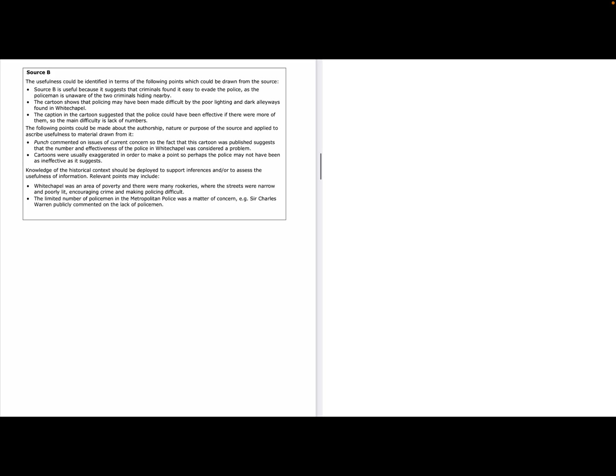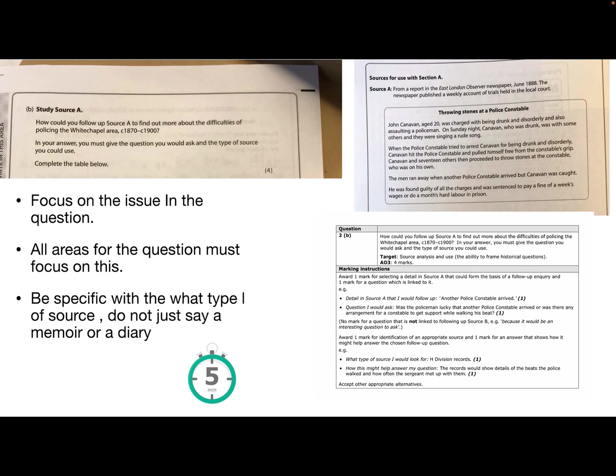Following points could be made about authorship, punch, comments on issues of current concern. So the fact this cartoon is published suggests that the number and effectiveness of police in Whitechapel is considered a problem even if they're poking fun at the police. Cartoons are usually exaggerated to make a point so perhaps the police may not have been as ineffective as it suggests. And then thinking back to knowledge Whitechapel is an area of poverty. There are many rookeries so if we remember those are the really tightly packed housing where you're probably living in one room it's not very good quality. The streets are narrow and poorly lit encouraging crime and making policing difficulty. The limited number of policemen in the metropolitan police is the main concern e.g. Sir Charles Warren publicly commented on the lack of policemen and if you remember to the Ripper murders you could say that they had to request help from the army at that time. So those again on the mark scheme it's not exhaustive. If you come up with other valid points they will come through and give you the marks for that.